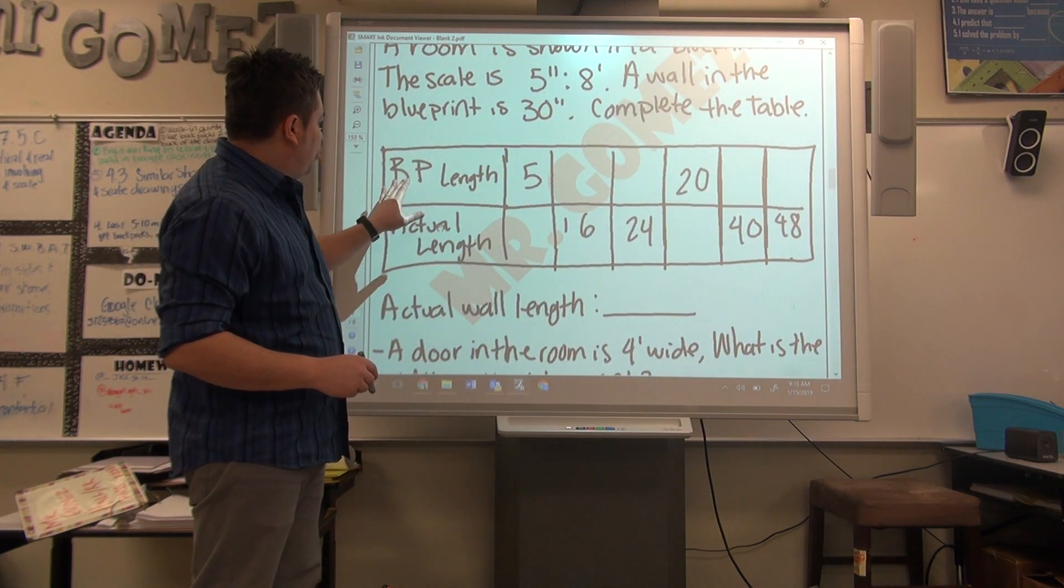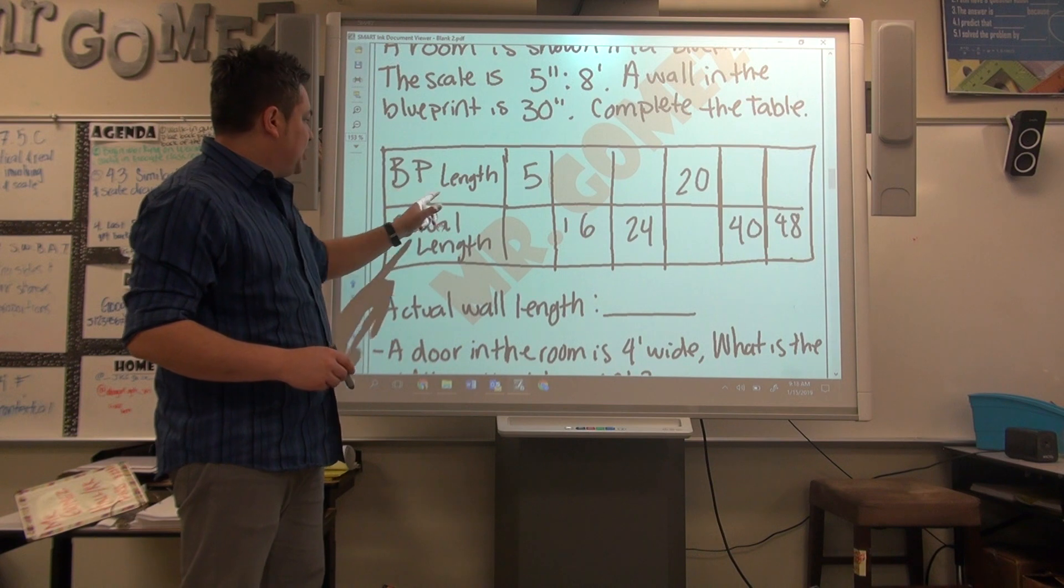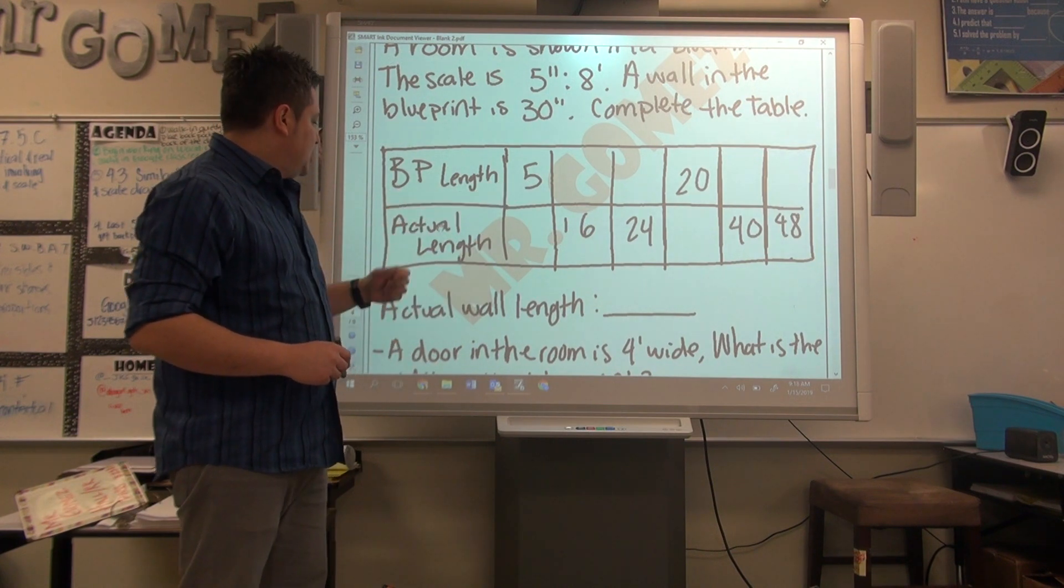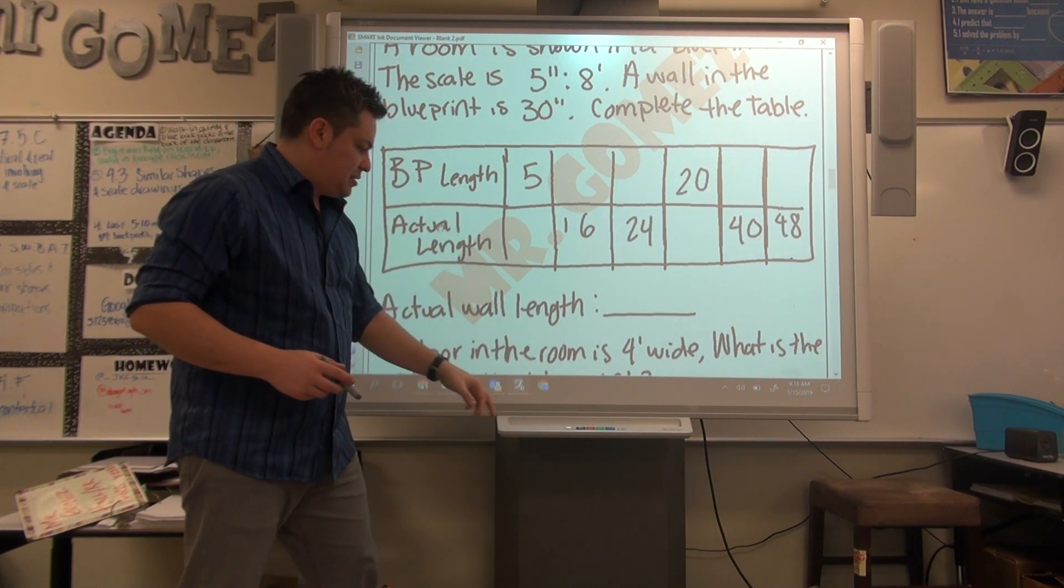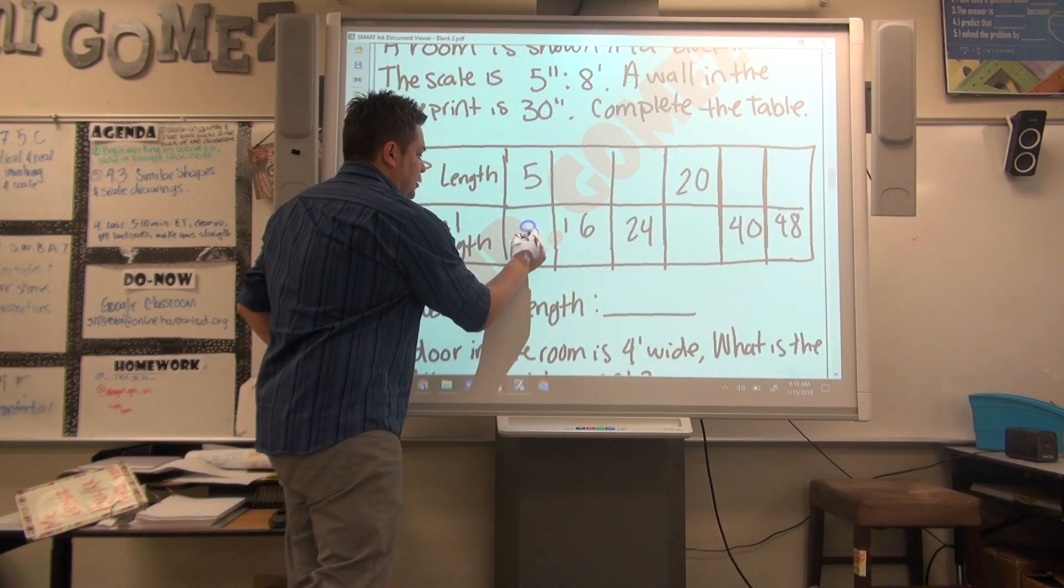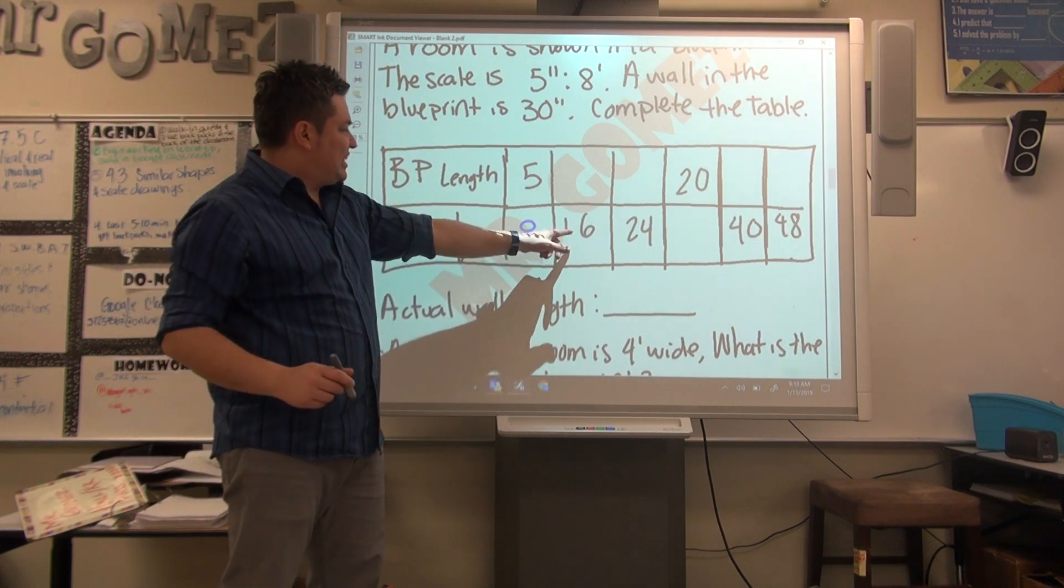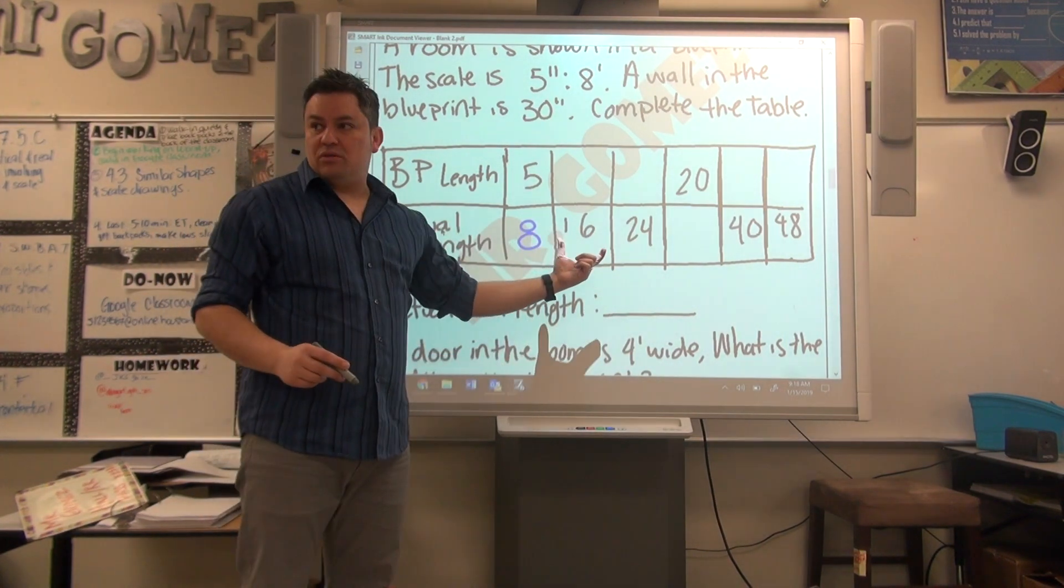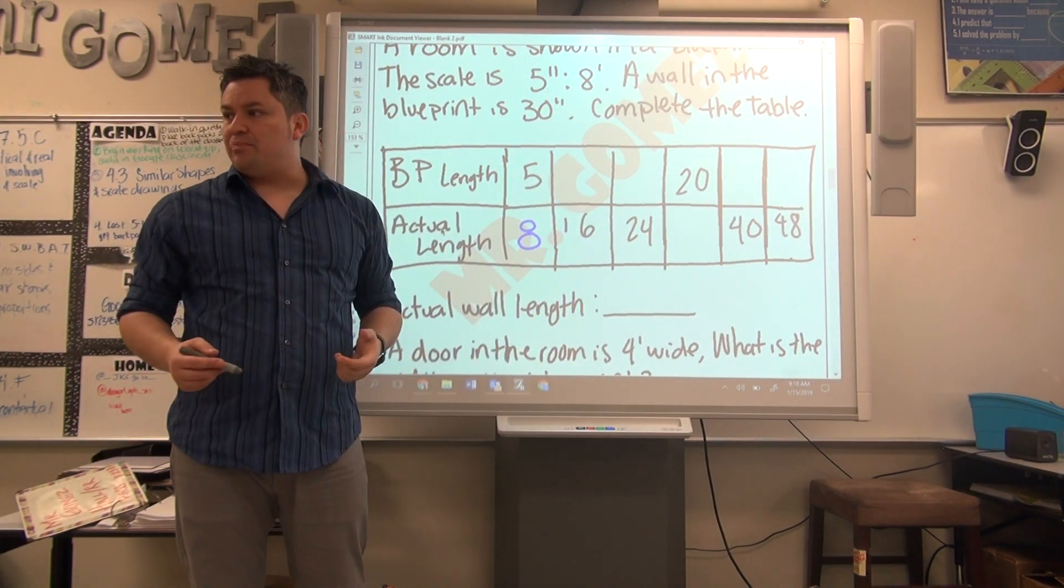So we have a table created for us right here. For blueprint length 5 inches, actual length is 8 feet given to us. If I have 16 on the actual, how many inches is that going to be? 10. So you kind of just go with the flow.